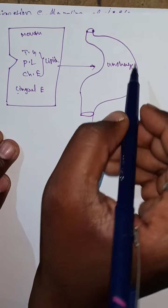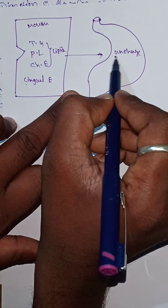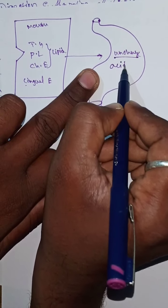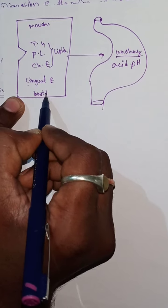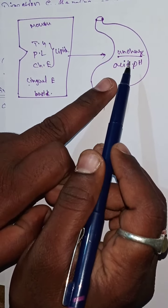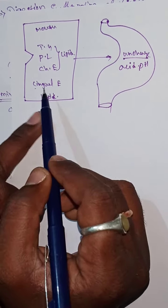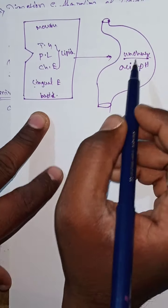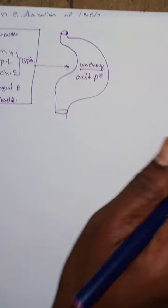The compounds are almost unchanged in the stomach because the lingual enzyme is produced only from the mouth, not from the stomach. Also, the mouth has an acidic pH while the stomach has a basic pH — so there is no chance for digestion of lipids in the stomach.